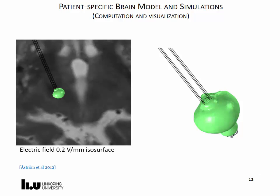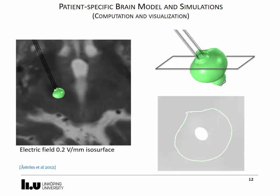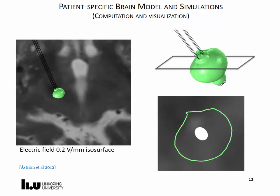The representation of the electric field in this way is useful to make relative comparisons between patients and settings. Furthermore, the electric field can be superimposed to the patient image and show the region within the limits of this electric field magnitude using an isocontour.